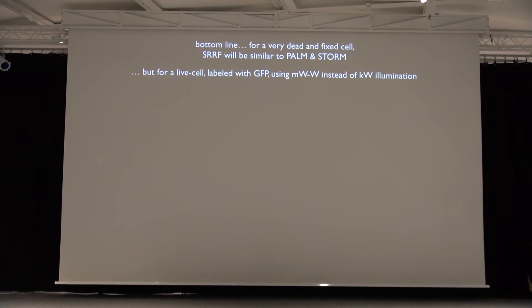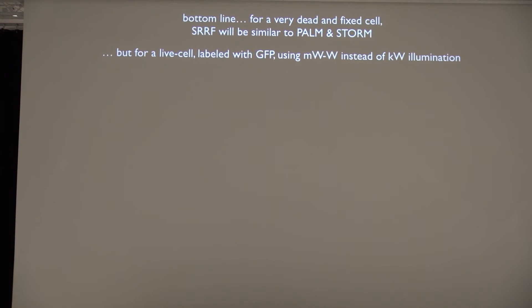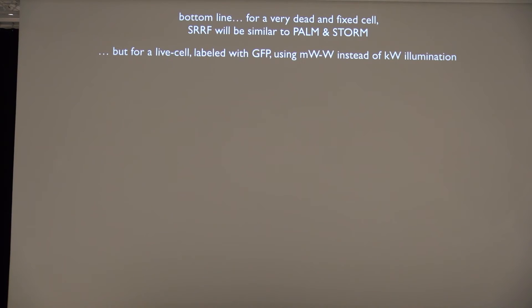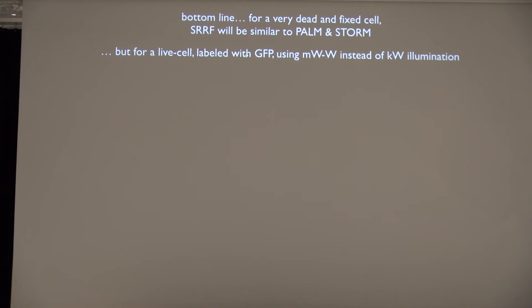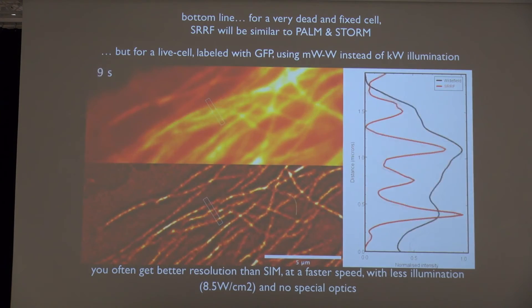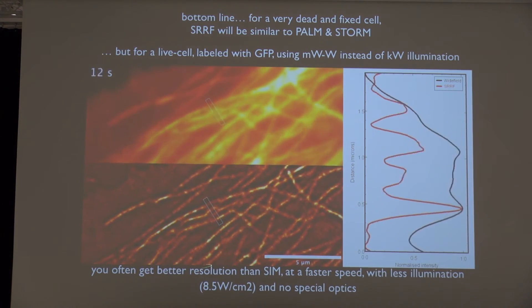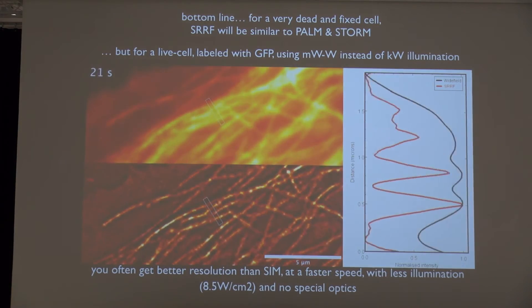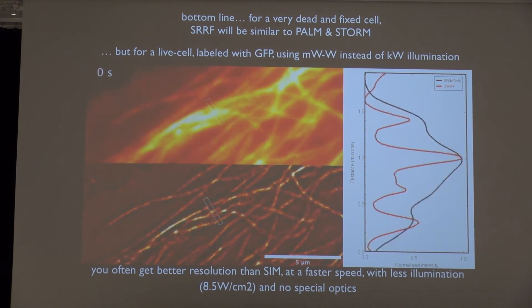So what have we done with this? Bottom line: for a very fixed dead cell, SURF is very similar to PALM/STORM — you might even use other algorithms and get equivalent results. But for a live cell labeled with GFP, using microwatts instead of kilowatts — which is typical for DSTORM — we end up with results like this. What you're seeing here is microvesicles labeled with GFP. We often get better resolution than SIM at a faster speed, with less illumination and no special optics. This is just a standard widefield microscope we're using.